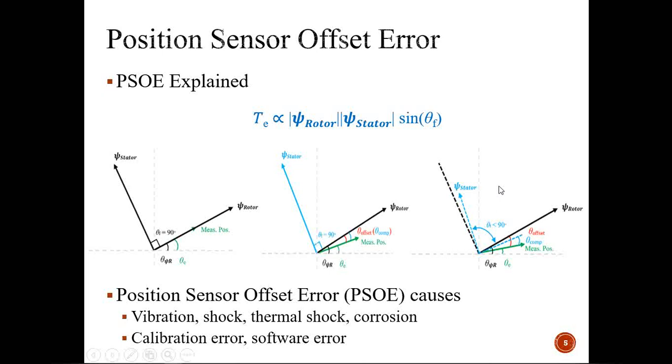This could happen due to many reasons while the machine is in a system: vibration, shock, thermal effects, or it could come into picture as a manufacturing error or software error. Having such an error will influence your output torque generation. If the error is 90 degrees, you could end up not generating torque, and even worse, you could reverse the torque, which could have adverse effects on the system.